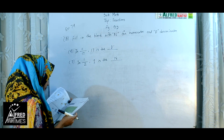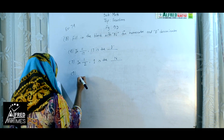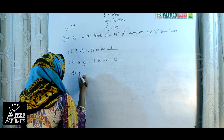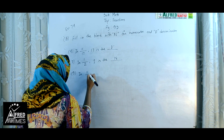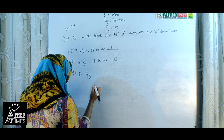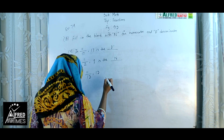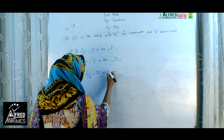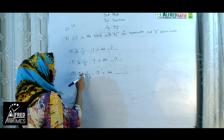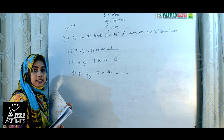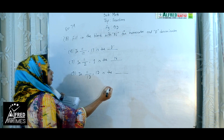Number 9: in 11 by 13, 13 is the lower part — 13 is the denominator. So we write D here.